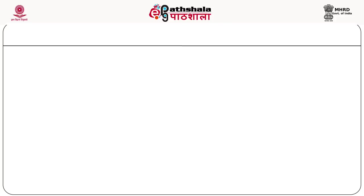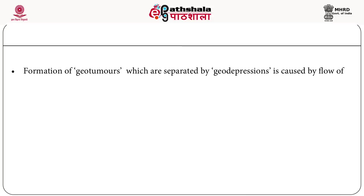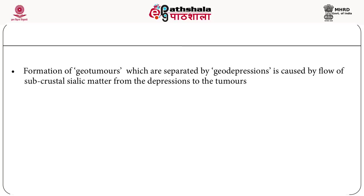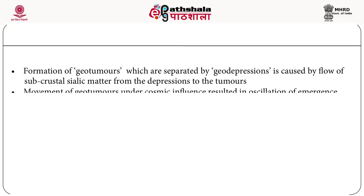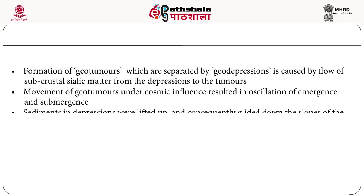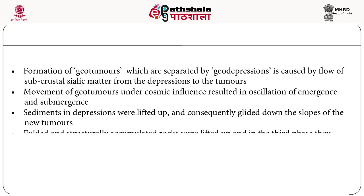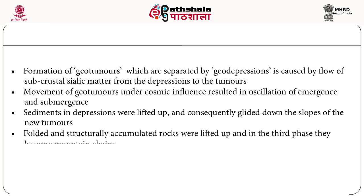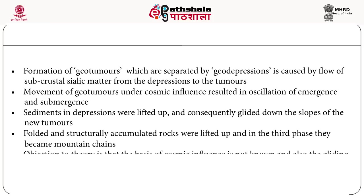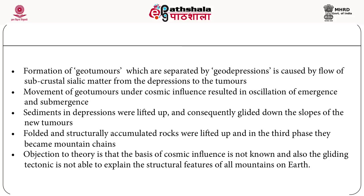The oscillation and undation theory proposes formation of geotumors separated by geodepressions, caused by flow of sub-crustal sialic matter from depressions to the tumors. Movement of geotumors under cosmic influence resulted in oscillation of emergence and submergence. Sediments in depressions were filled and glided down the slopes of new tumors. Folded and structurally accumulated rocks were lifted up and became mountain chains. An objection to this theory is that the basis of cosmic influence is not known, and gliding tectonics cannot explain structural features of all mountains.